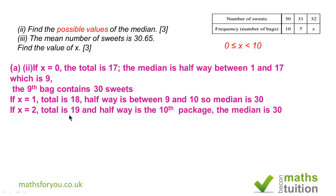If x is 2, we have got 19 and half way is the 10th package, so the median is 30. If x is 3, the total is 20, so half way is between the 10th and the 11th package. The 10th package has got 30 sweets, the 11th package has got 31 sweets. If you add those 2 and divide by 2, you have 30.5.